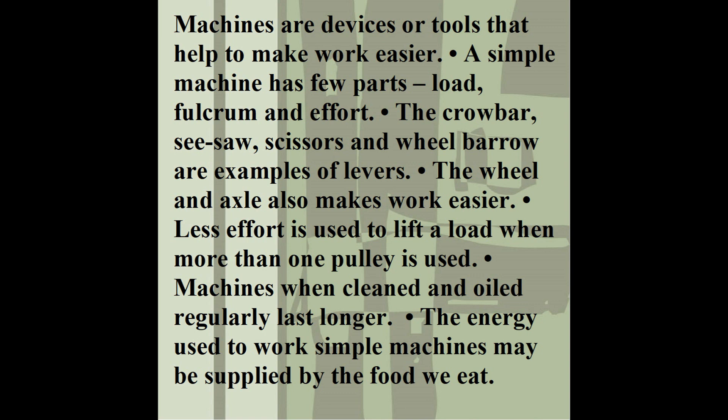A simple machine has few parts: load, fulcrum and effort. The crowbar, seesaw, scissors and wheelbarrow are examples of levers. The wheel and axle also makes work easier. Less effort is used to lift a load when more than one pulley is used. Machines when cleaned and oiled regularly last longer. The energy used to work simple machines may be supplied by the food we eat.